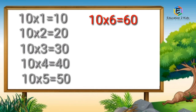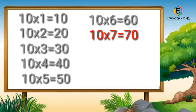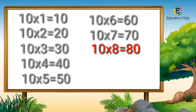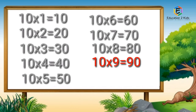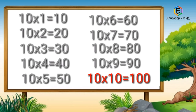Ten sixes are sixty. Ten sevens are seventy. Ten eights are eighty. Ten nines are ninety. Ten tens are hundred.